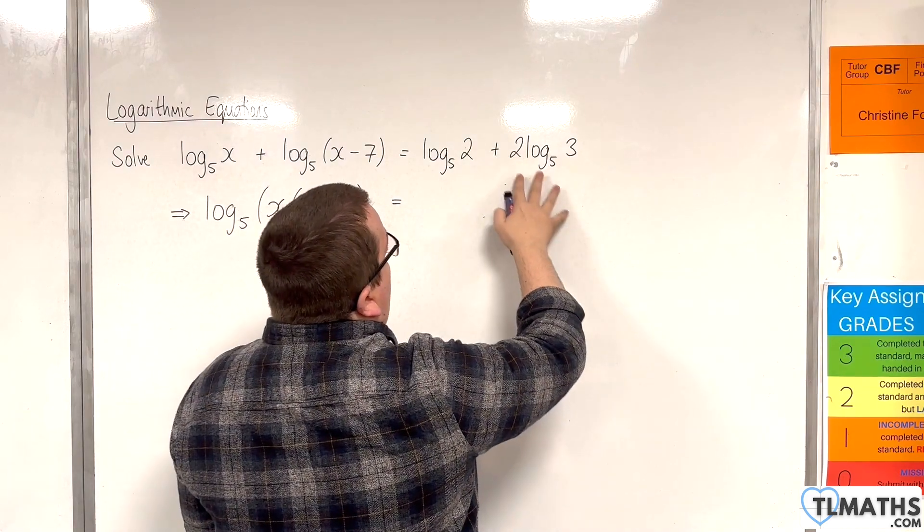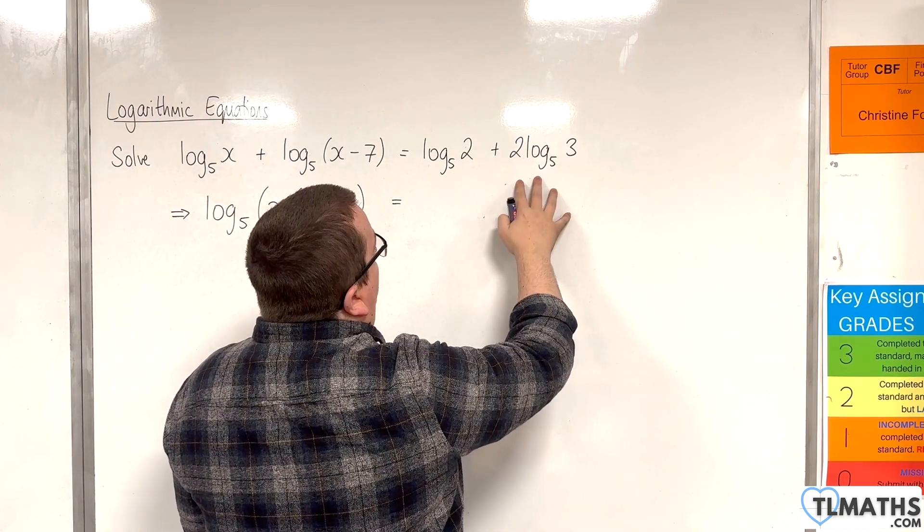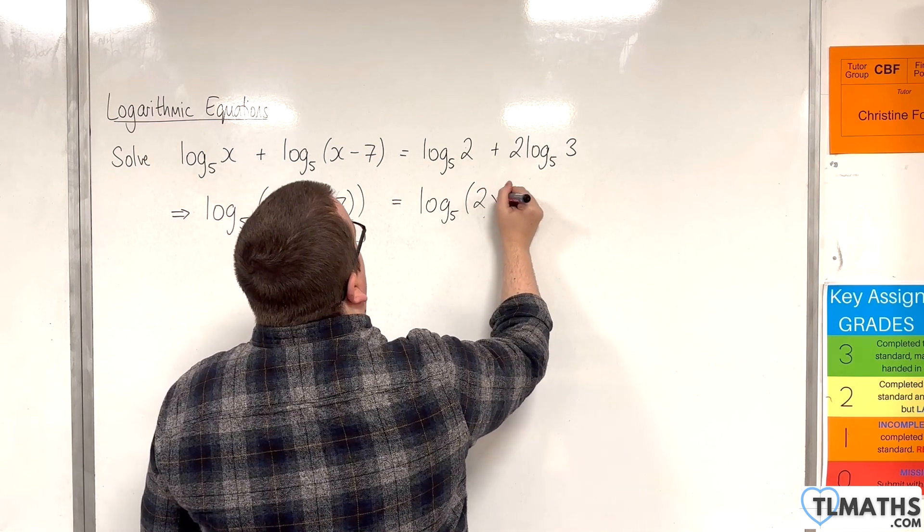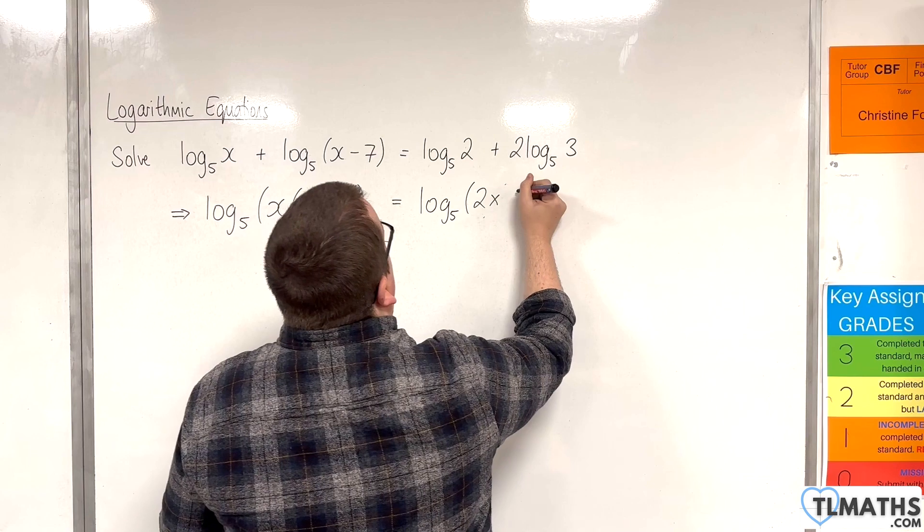And then I can use the product rule to bring those two together. So we would have log base 5 of 2 times 9.